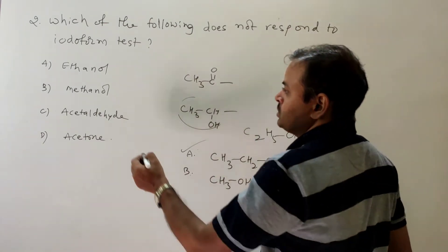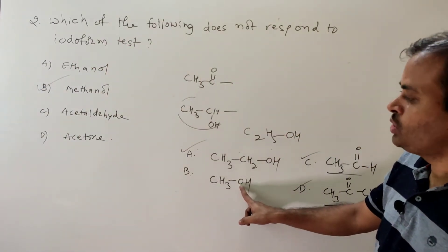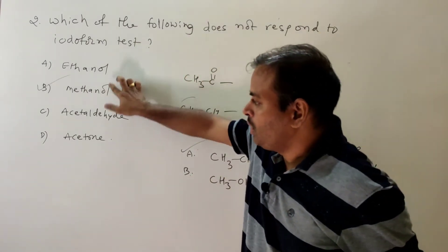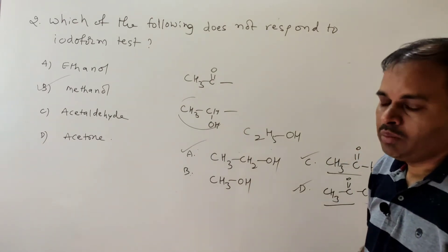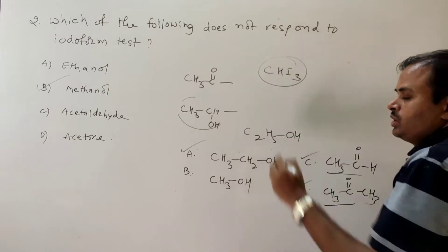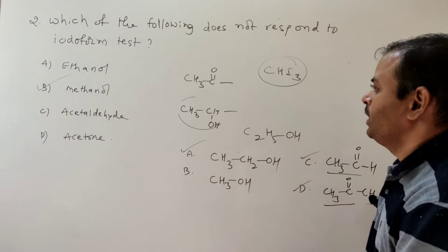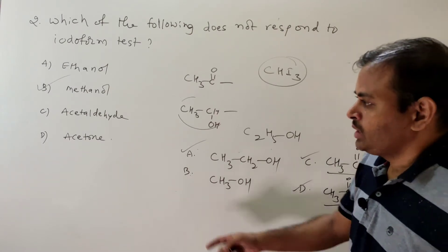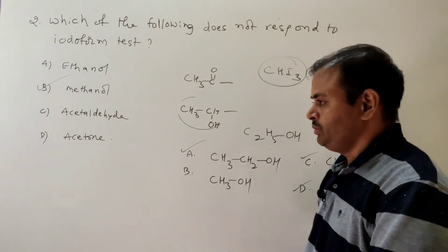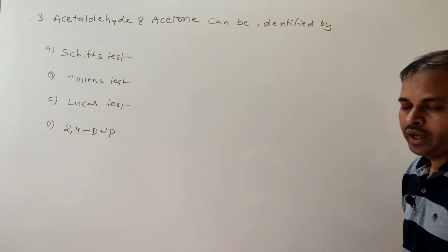Since methanol has neither the CH3CHOH nor the CH3CO group, the correct answer is B — methanol does not respond to the iodoform test. Iodoform (CHI3) is a yellow crystalline solid. All remaining options give a positive result for the iodoform reaction.